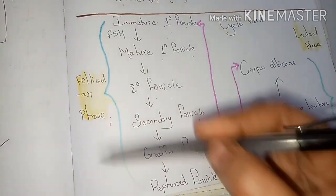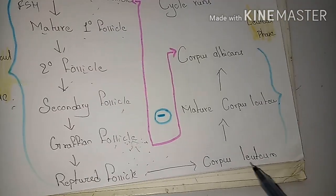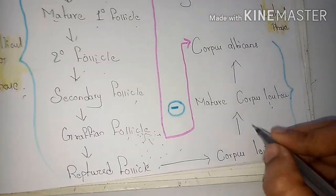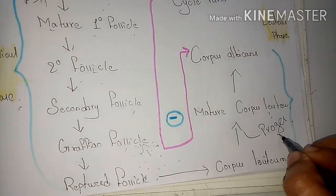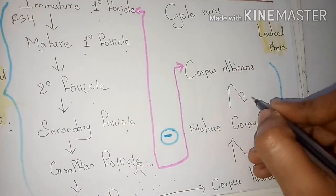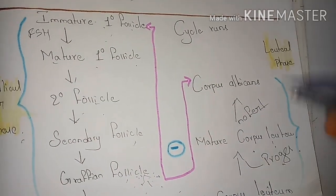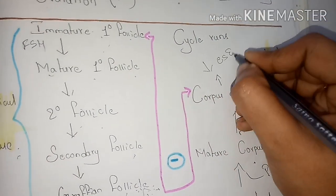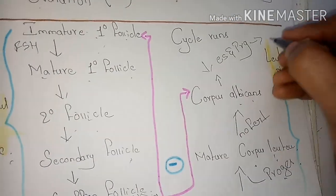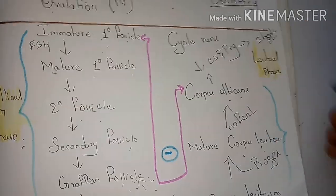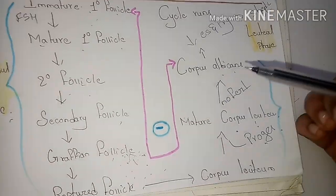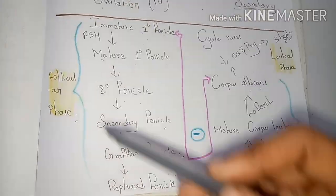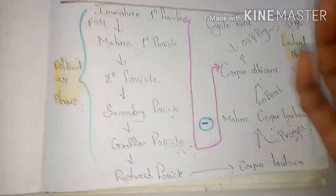After ovum release, the corpus luteum develops into the mature corpus luteum, which liberates progesterone to make the endometrium edematous and secretory. When no fertilization occurs, the mature corpus luteum develops into the corpus albicans, which decreases estrogen and progesterone levels, leading to shedding of the endometrium. The development of the corpus luteum is known as the luteal phase. These are the two phases of the ovarian cycle.